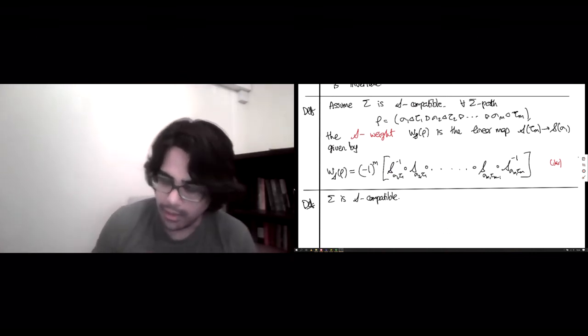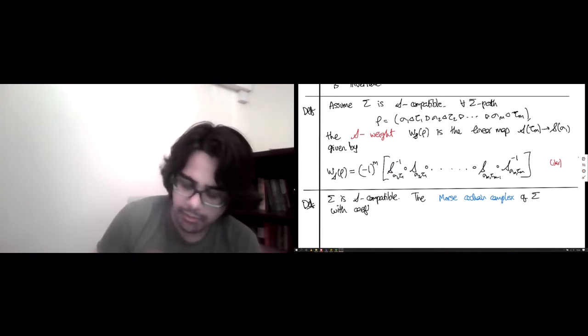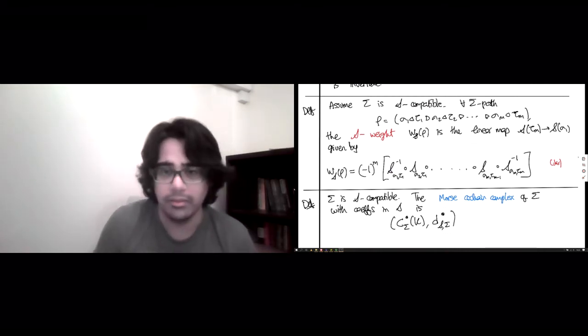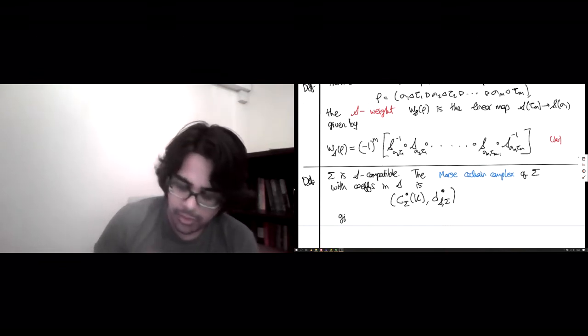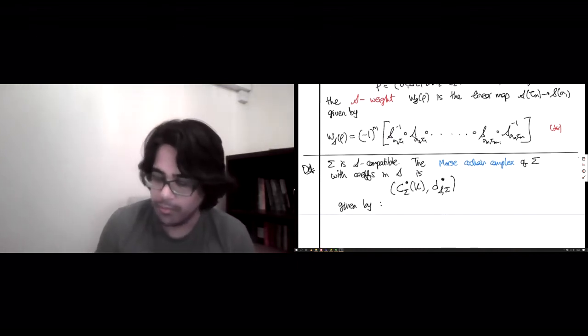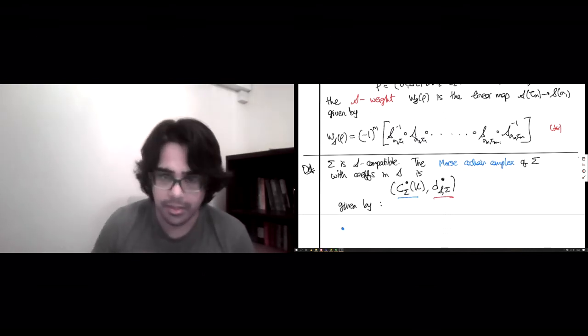Okay, so let's see, the Morse co-chain complex of sigma with coefficients in the sheaf F is, let's write it like this, so there's going to be the co-chain group C sigma K. And the co-boundary group, the co-boundary maps, which I'm going to write as D S sigma. So that's a bit of a mouthful, but that's okay. So we still have to define these vector spaces and the Morse boundary map between them. So, I mean, hopefully there are no surprises here.